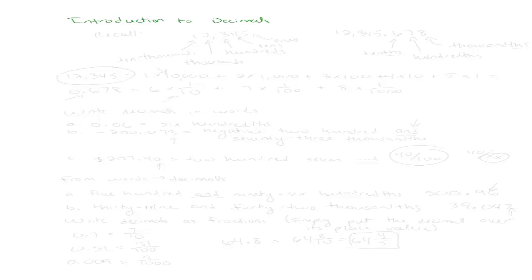If you recall back when we started talking about whole numbers, we looked at a number like 12,345, and each one of those digits has a place value. So for example, the digit one is at the 10,000s place value.